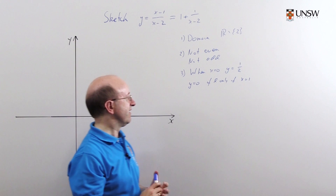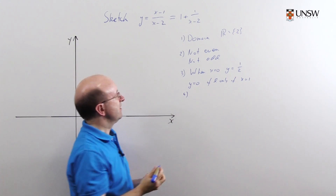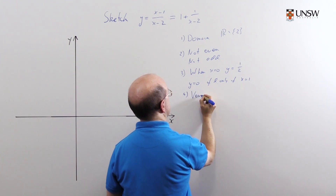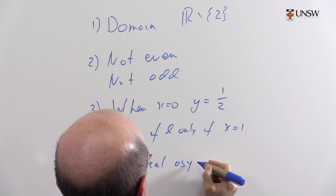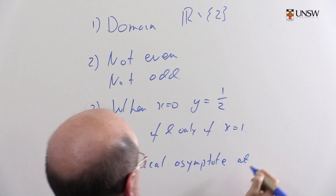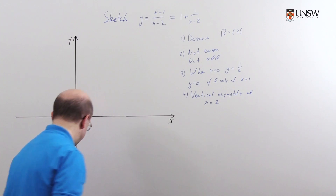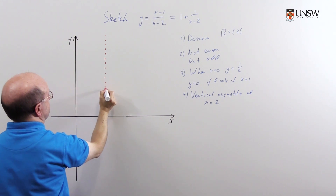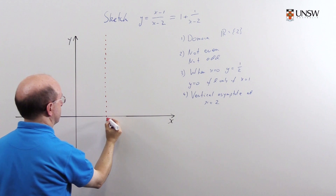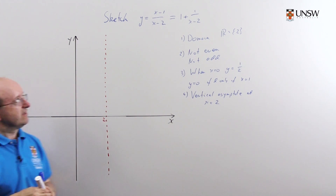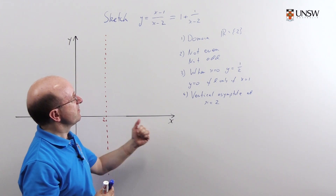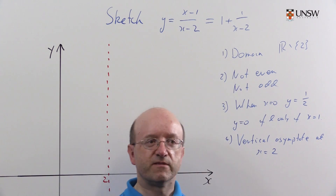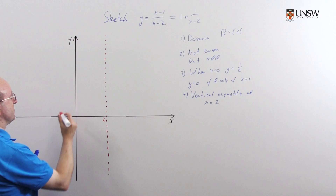Now the next thing we'd want to look at are asymptotes. There's clearly a vertical asymptote when x equals 2 — that's when the function is not defined. So there's a vertical asymptote at x equals 2, and we'll draw that in. There's also a horizontal asymptote because as x goes to infinity, 1 over x minus 2 tends to 0, so y tends to 1. So we have a horizontal asymptote given by y equals 1.